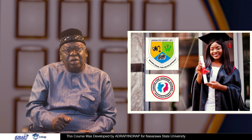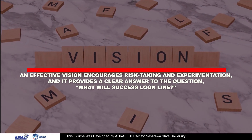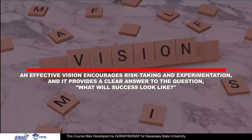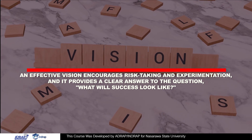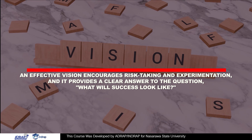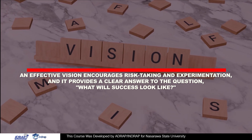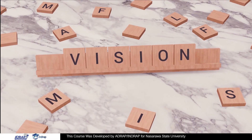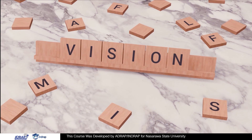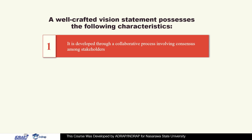A vision statement shares the purpose of the organization. An effective vision encourages risk-taking because business itself is about risk, and if you don't have a vision, you will not know how to take the risk. It also provides a clear answer to the question: what will our success look like? A well-crafted vision statement is developed through a collaborative process, meaning you have to involve all stakeholders so that they will agree — that is what we mean by consensus.